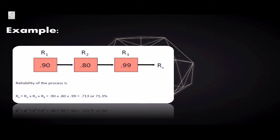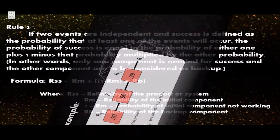Here is an example: a product or system has three components — R1 with a reliability of 90%, R2 with 80%, and R3 with 99%. To find the reliability of the whole system, we multiply the reliabilities: 0.90 × 0.80 × 0.99 = 0.713, or 71.3%. So the whole product or system has a reliability of 71.3%.